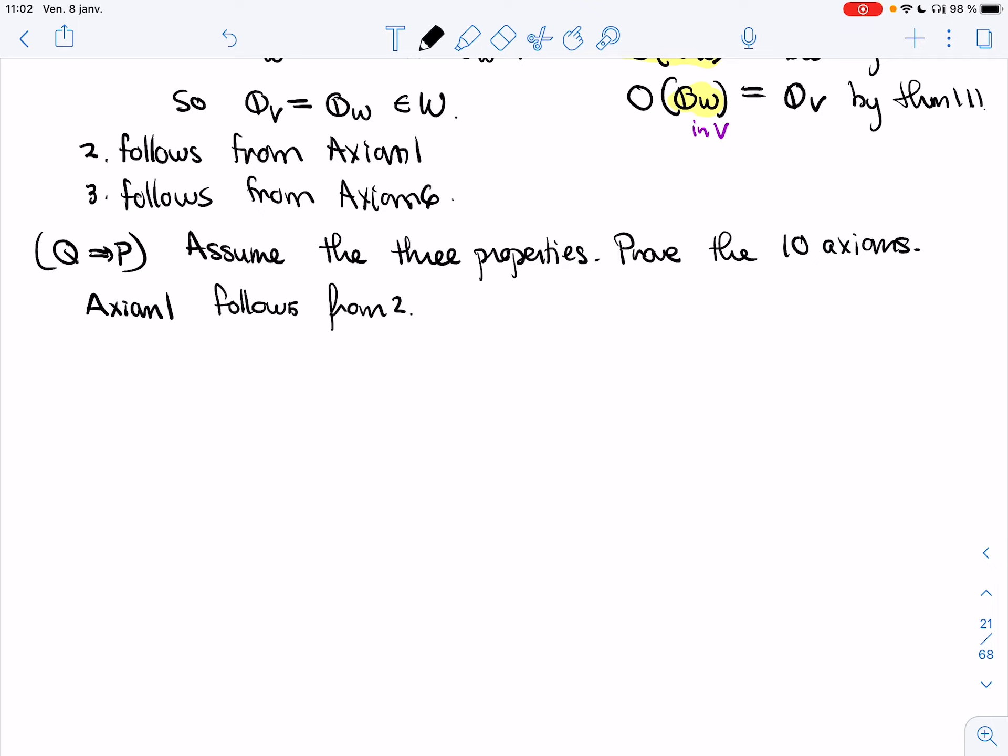In fact, pretty much what we're saying is that's one of the axioms you have to prove. Now, we've already mentioned this. Axioms 2 and 3, those are about how nice the addition is. That follows from V being a vector space. We're using the same operation, and so if it was nice for V, it's going to be nice on W. That's a smaller set.